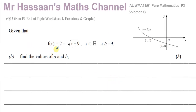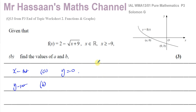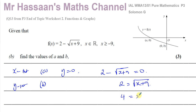Now for part b: given that f(x) equals 2 minus the square root of (x + 9), where x is a real number and x must be greater than or equal to minus 9, find the values of a and b. Now a is the x-intercept, found when y equals 0. So 2 minus the square root of (x + 9) equals 0, giving the square root of (x + 9) equals 2. Squaring both sides: x + 9 equals 4, so x equals negative 5.